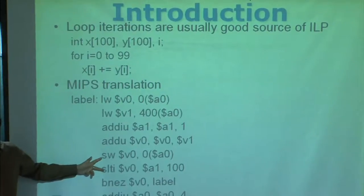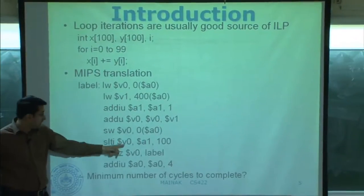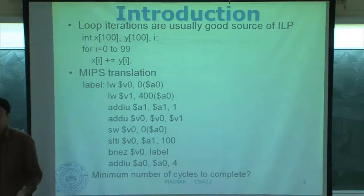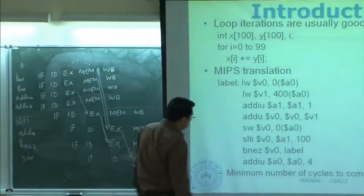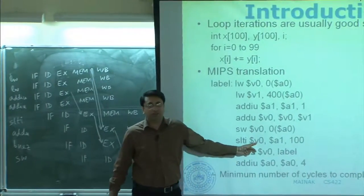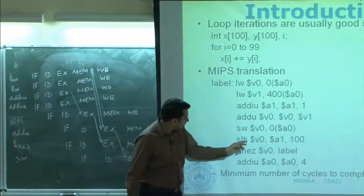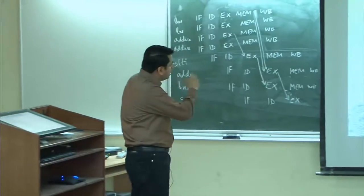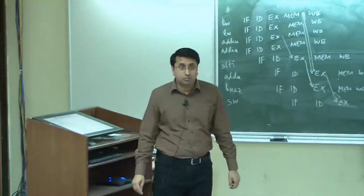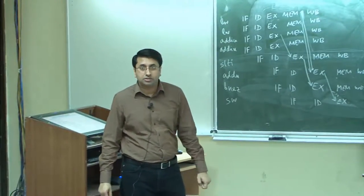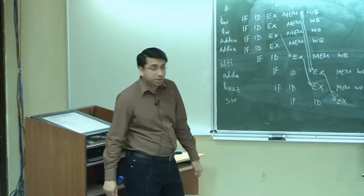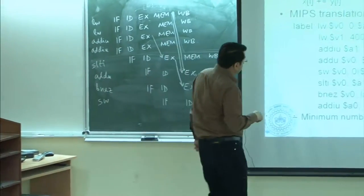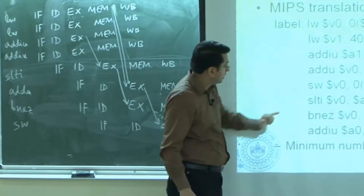These two instructions are in an anti-dependence: this one is reading from dollar v0 and this one is writing to dollar v0. There is no actual data dependence between them — it is a totally false dependence that happened only because the compiler ended up choosing dollar v0 as the target of this instruction. Does anybody see any other anti-dependence in this code? Fourth and sixth instructions, and first and last — dollar a0 is written here and read here.